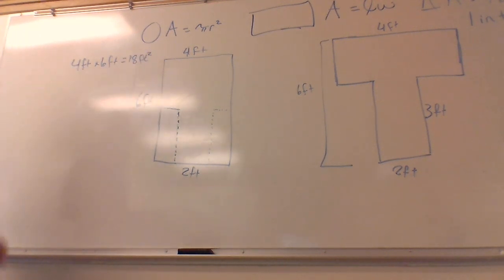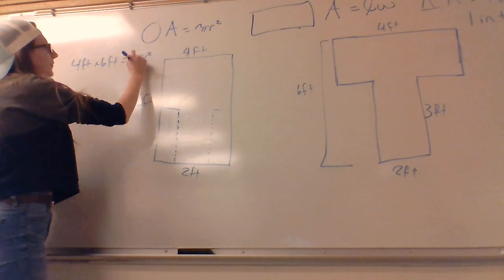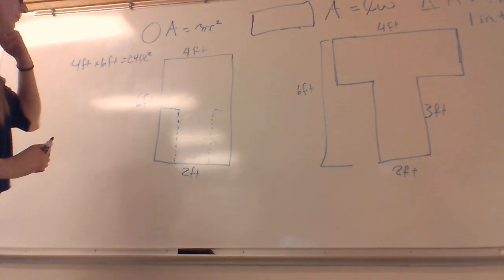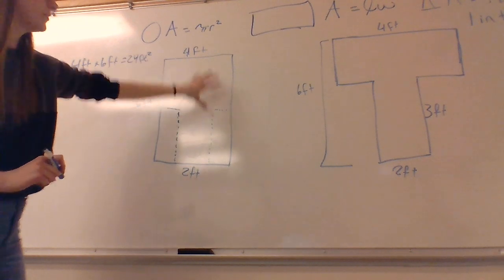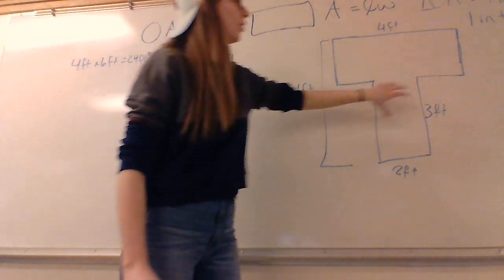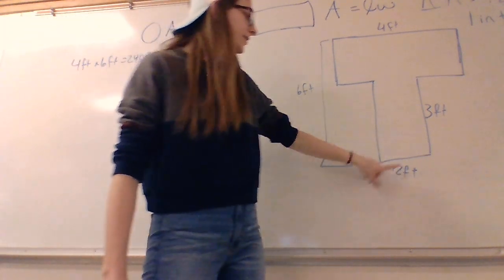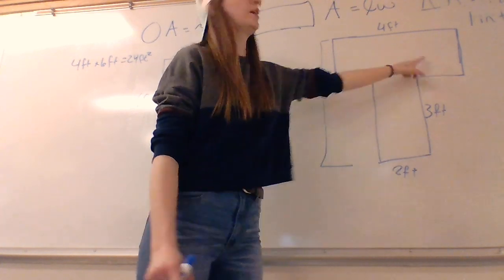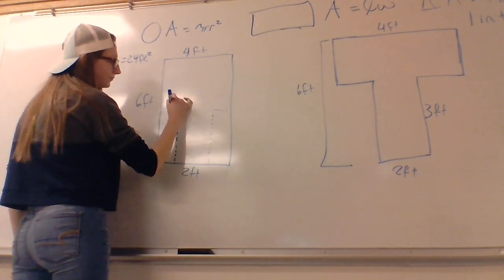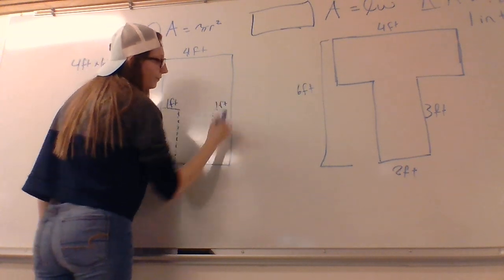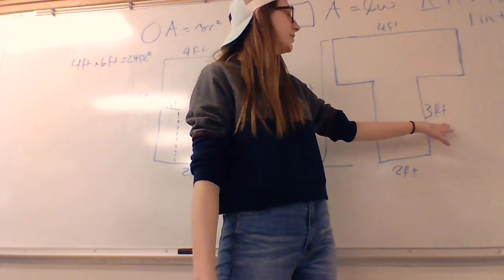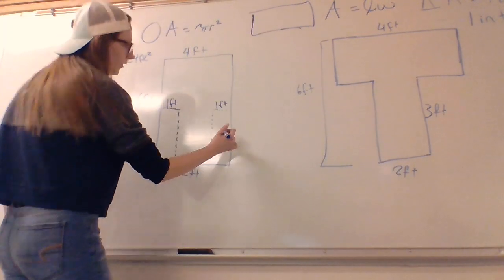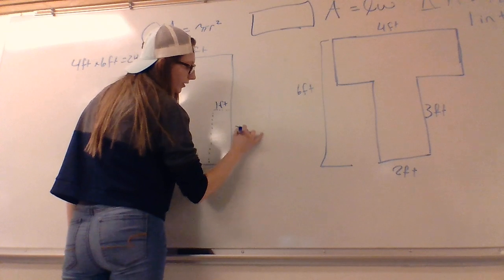Remember the squared, that's super important because we are working in area. We have the area of this whole rectangle. Now we need to take away the cutout areas. We know that this is two feet and this is four feet, so four minus two equals two divided by two equals one. Each of these sections are going to be one foot wide. And we know because of our givens that this area is going to be three feet. So we have three feet here.